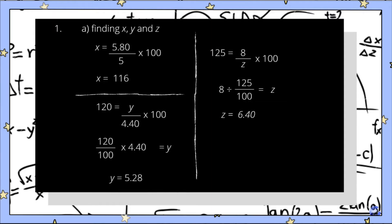For Y, the price index is already given, which is 120. When we substitute into the formula, it would be: 120 equals Y divided by 440, multiplied by 100. To obtain Y, we divide 120 by 100 and then multiply by 440. So we get Y equals 528.